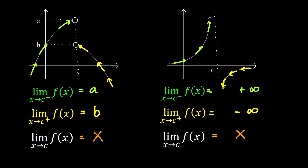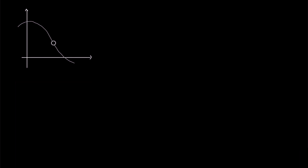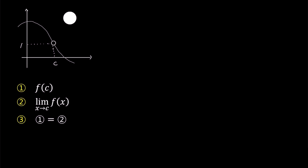Now let's examine all three conditions while looking at the graphs. In the first graph, f(c) is not visible as there is no solid point, indicating non-existence. However, both the left-hand limit and the right-hand limit approach 1, so the limit exists and equals 1. Since the first condition is not satisfied, the first and second conditions cannot be equal — therefore the answer is not continuous (✗).